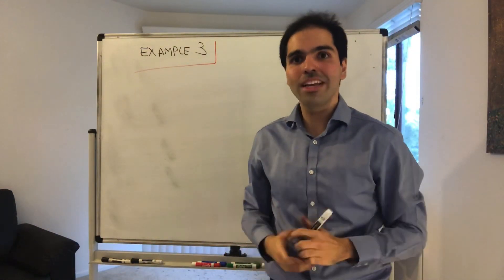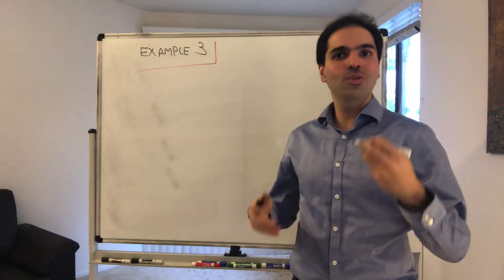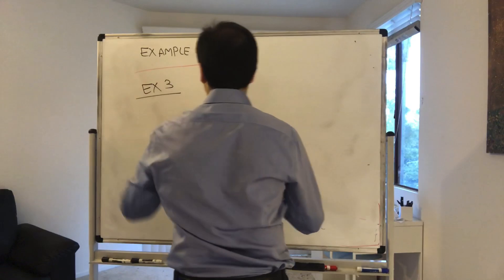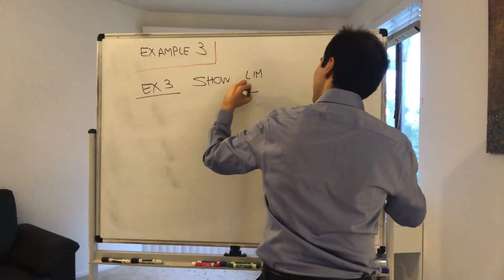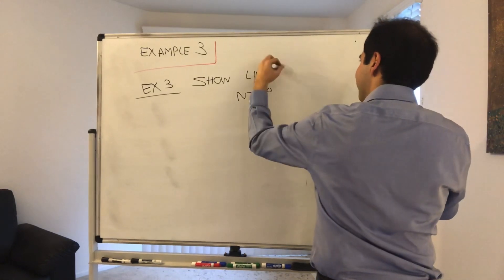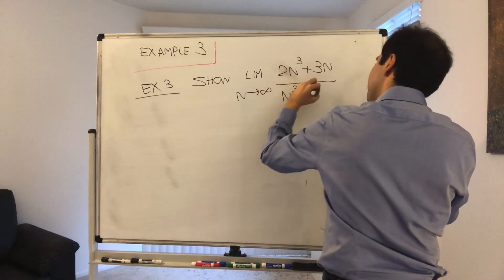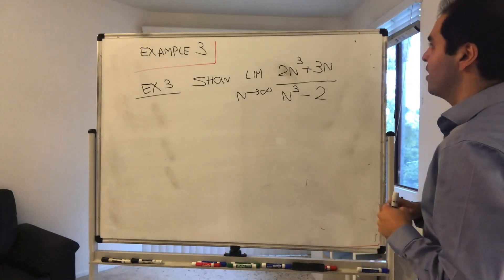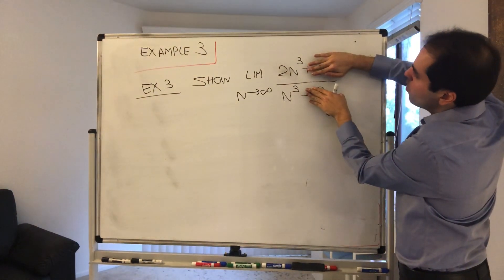Thanks for watching and welcome to our third example of the rigorous definition of a limit. Today, we would like to do a slightly fancier fraction than last time with lots of interesting twists and turns. We want to show that the limit as n goes to infinity of 2n cubed plus 3n over n cubed minus 2 equals 2, since in the long run, as n goes to infinity, those first two terms dominate.